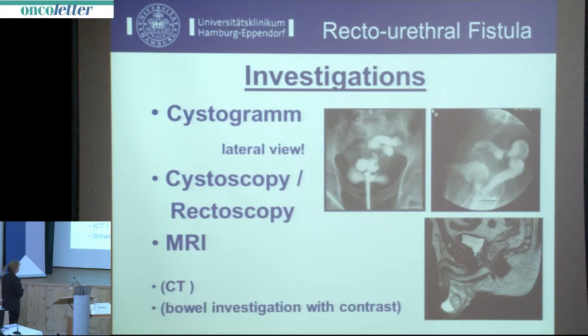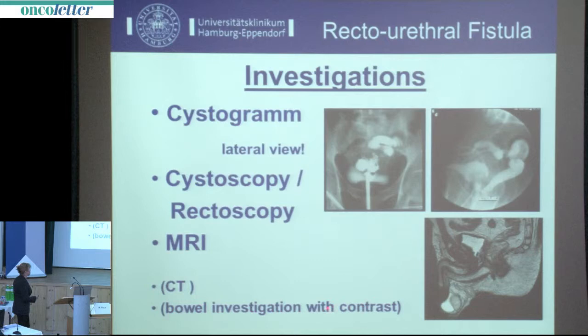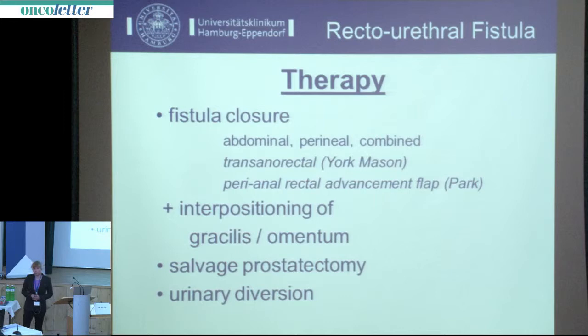For investigations, it is important when performing a cystogram to have a lateral view to see the exact localization of the fistula — after radical prostatectomy this is normally in the area of the anastomosis. For complex fistulas, MRI is very helpful to see cavity formation and sometimes inflammation of the pubic bone. Rectoscopy and cystoscopy may also help. A bowel investigation with contrast media or CT is not very helpful.